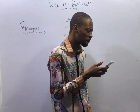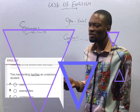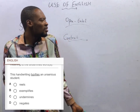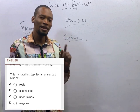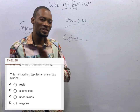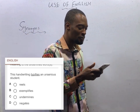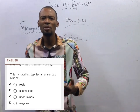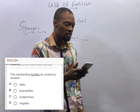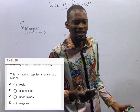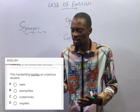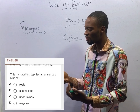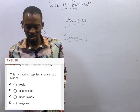'The handwriting typifies an unserious student.' This is typical of an unserious student — it means this is an example of an unserious student. So option B is correct. Typify means to embody, to exemplify — an image, a representation, a model, a resemblance of something. Its synonyms are denote, exemplify, signify, or represent. 'The handwriting represents an unserious student, exemplifies an unserious student.' B is correct.